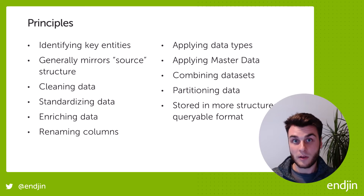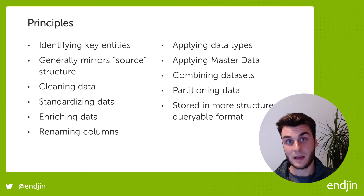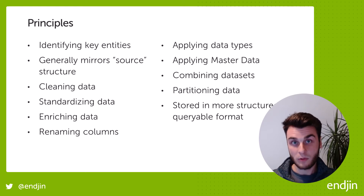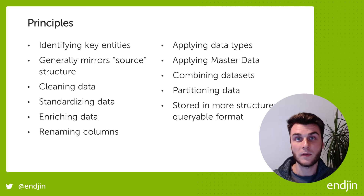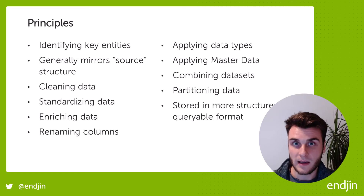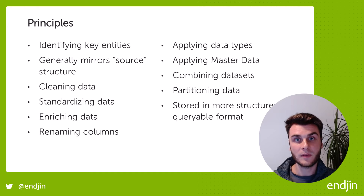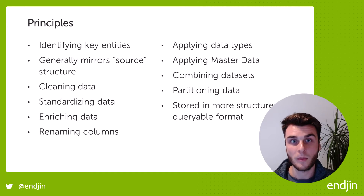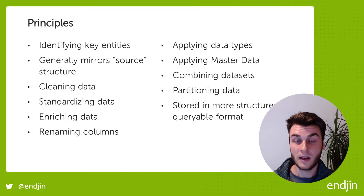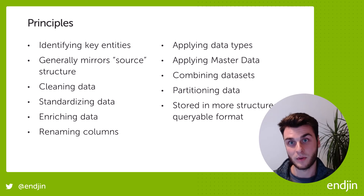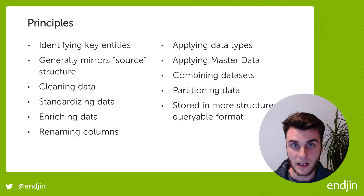That will also include partitioning the data and combining data sets. If we have the same entity coming from two slightly different source systems but they're almost identical, we might want to combine those into the same table — but we'd still add a column or indicator showing which rows came from which data source. This can be achieved easily with partitioning in Delta tables and Spark tables. The output is a more structured and queryable format in a Delta table, so we can switch to our SQL endpoint and start querying it using T-SQL. It's a much easier-to-consume table format.